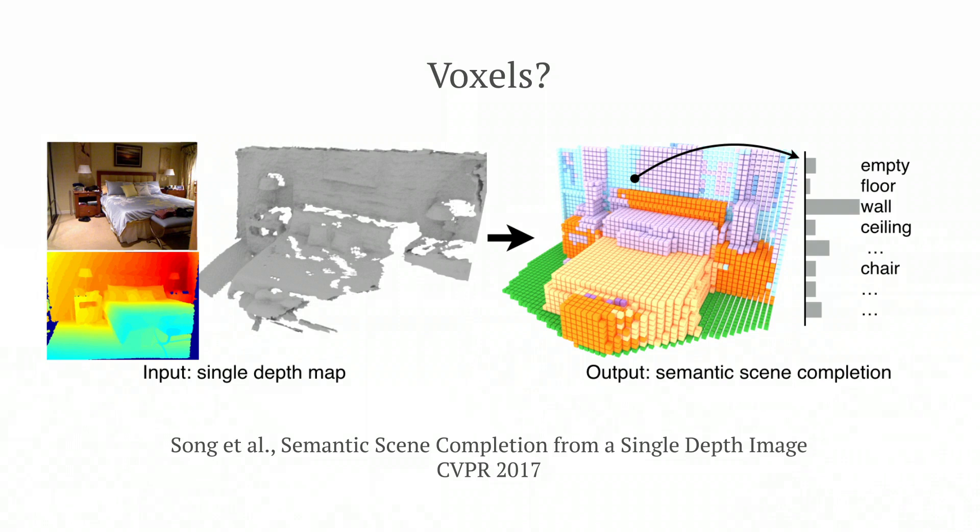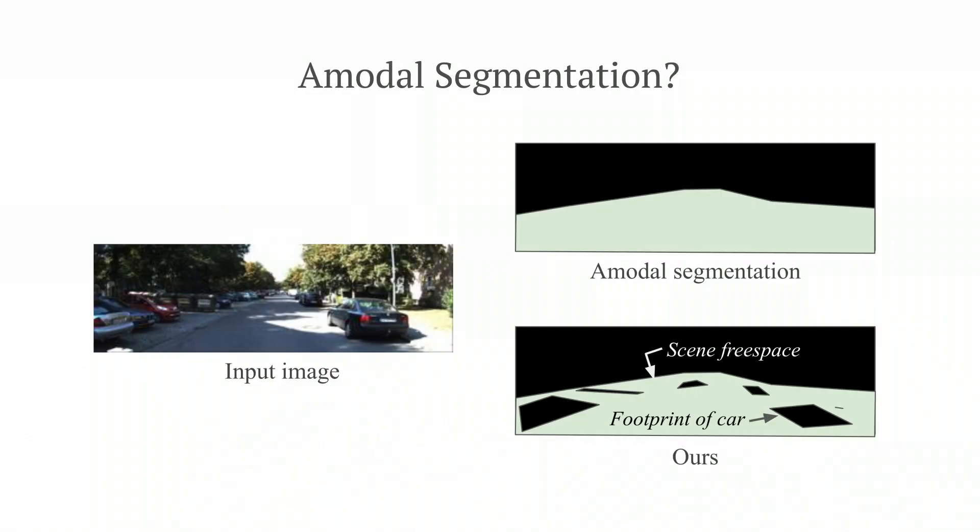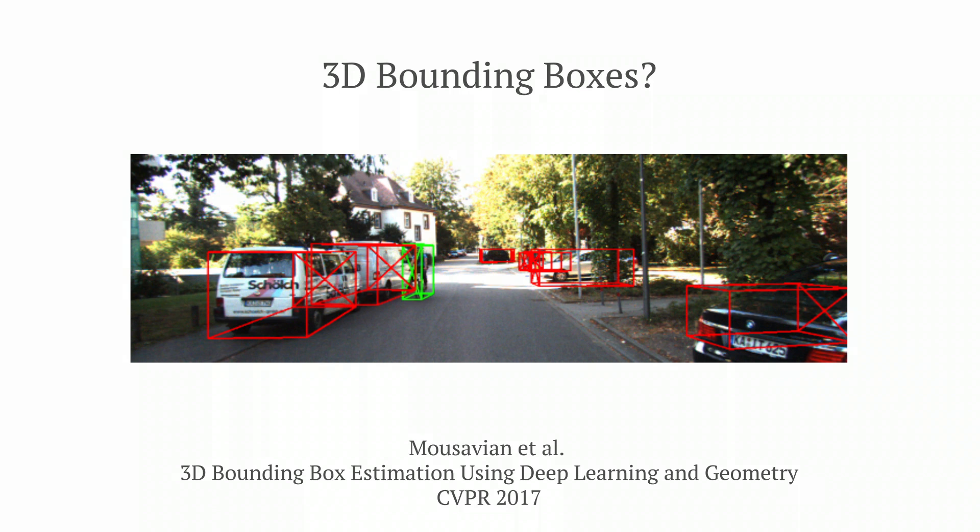Hidden geometry could be represented in alternative ways. We could use voxels, but these can be slow and expensive. A-modal segmentation predicts the extent of objects, including their occluded parts. This would give the extent of the ground, but without predicting object footprints, which are crucial for obstacle avoidance. 3D Bounding Boxes give coarse object locations, but only for those of known classes.